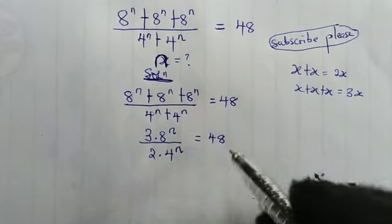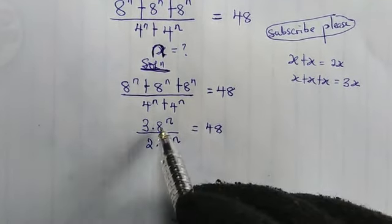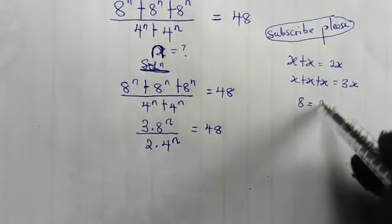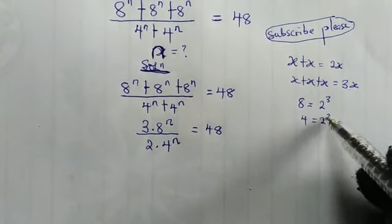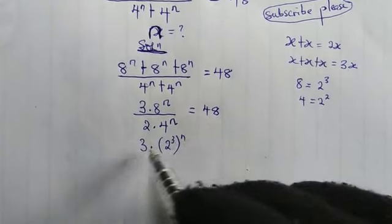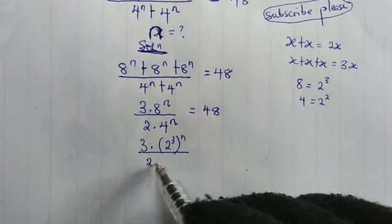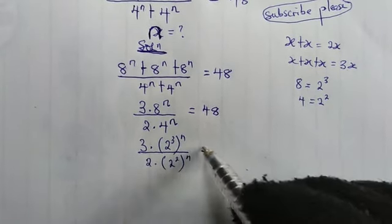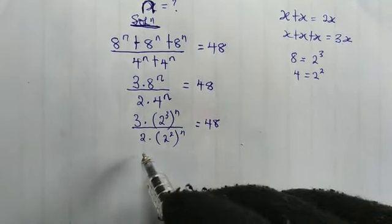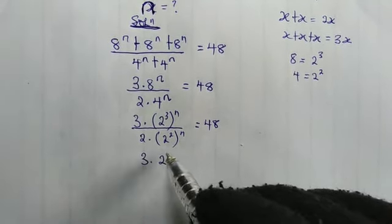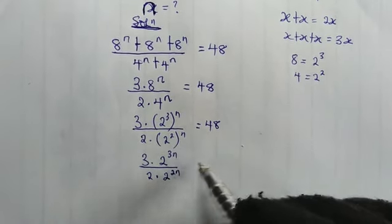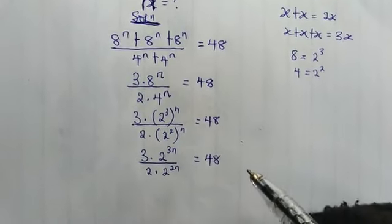Now we're going to express everything as a power of 2. We know 8 equals 2 cubed and 4 equals 2 squared. So we get 3 times (2 cubed) raised to n, all over 2 times (2 squared) raised to n, equal to 48. Applying the law of indices, this becomes 3 times 2^(3n) all over 2 times 2^(2n), equal to 48.